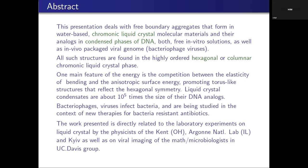This will give us some kind of transition on how to use lab experiments at the optical range to give insight into what happens at the DNA level. One thing in common among these two — molecular liquid crystals and DNA — is that both phases are found in what's called the hexagonal or columnar chromonic liquid crystal phase. This is not a phase as well known as smectics or nematics that everybody has heard of, but it's just a different phase. I will explain in a moment what it is.